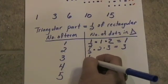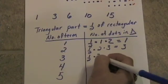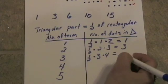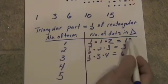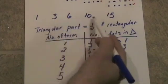The pattern continues. Half of three by four equals six. Notice these are the numbers in the sequence.